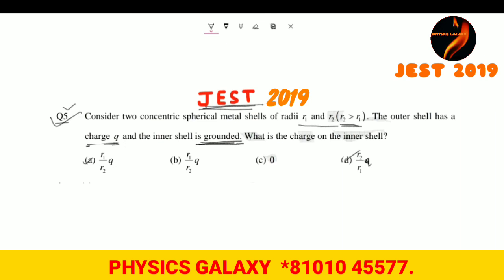Hello and welcome again. We are going to solve previously JEST problems and this particular problem is from electrostatics. Consider two concentric spherical metallic shells of radii R1 and R2 where R2 is greater than R1. The outer shell has a charge Q and the inner shell is grounded. What is the charge on the inner shell? So this is our question.